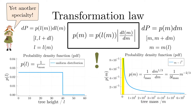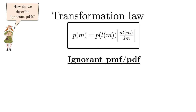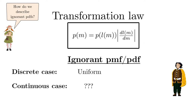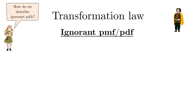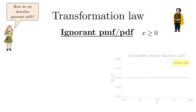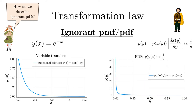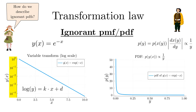This brings us to a very fundamental question: how do we describe ignorant PDFs? In the discrete case, the law of indifference implied equal probability. But in the case of continuous variables, ignorance does not necessarily imply a uniform PDF. As a further example, consider a non-negative quantity x with a uniform PDF in the interval 0 to x-max. If we are interested in the PDF of y equal to the exponential of x, the desired PDF is proportional to 1 over y. So if a variable is linear on a logarithmic scale, it has a 1/y dependence on the linear scale.